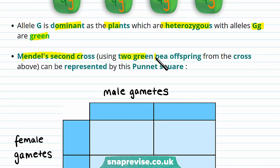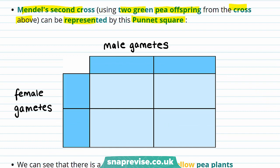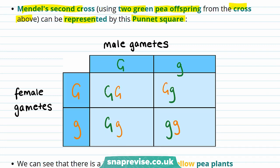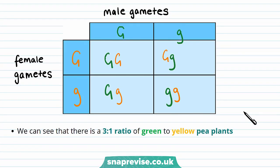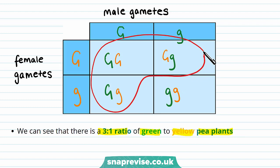Mendel's second cross, using two green pea offspring from the cross above, can be represented by another Punnett square. The offspring from above have the genotype big G little g, so the gametes will also be big G little g for both plants. Once we fill in the table we get a three to one ratio of green to yellow pea plants. This is because three of the offspring have at least one big G allele, making them green, while only one has the genotype little g little g, making it yellow.